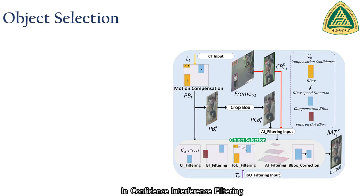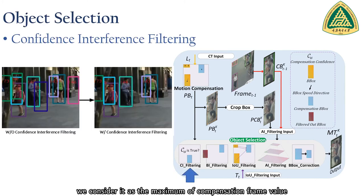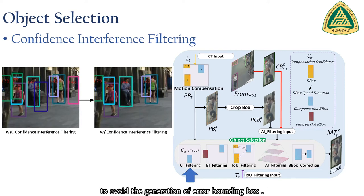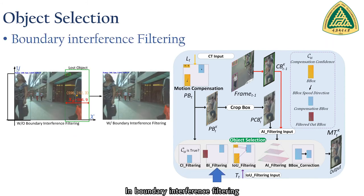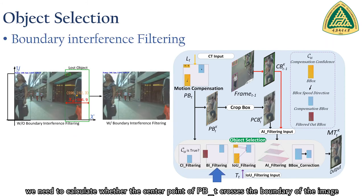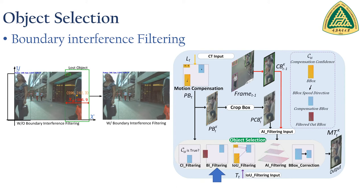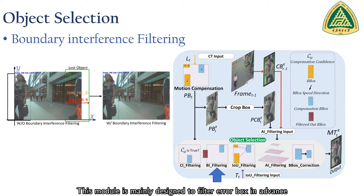In confidence interference filtering, we consider it as the maximum compensation frame value and employ the compensation confidence CF threshold to avoid the generation of error bounding boxes. In boundary interference filtering, we calculate whether the center point of PBT crosses the boundary of the image. This module is mainly designed to filter error boxes in advance to reduce subsequent computation.